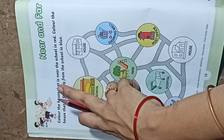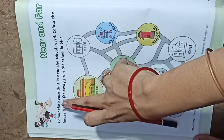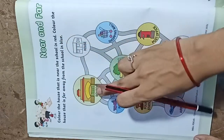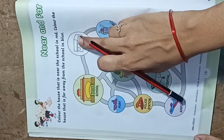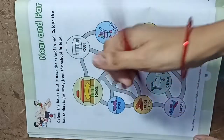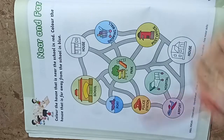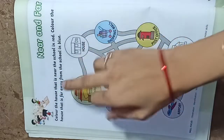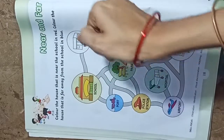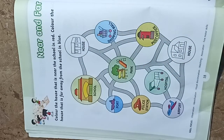Color the house that is near the school in red. Color the house that is far away from the school in blue. So we have two colors: red and blue. The house that is near the school is red, and the house that is far away from the school is blue.